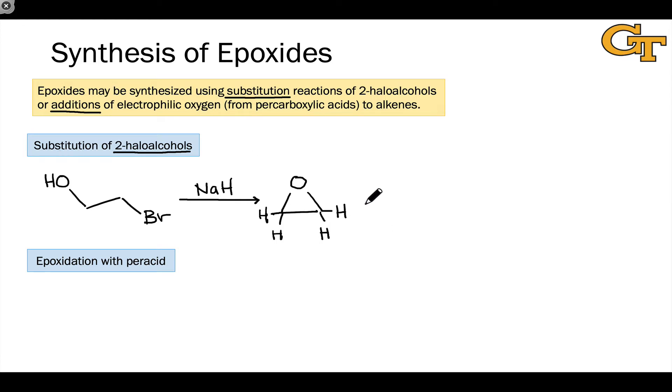One important point with this substitution method is that it results in inversion of configuration at the electrophilic center. So if, for example, we start with a substrate like this in which the electrophilic carbon is stereogenic, treatment of this substrate with a base in an intramolecular SN2 is going to lead to a product in which the configuration of that stereocenter has been inverted.